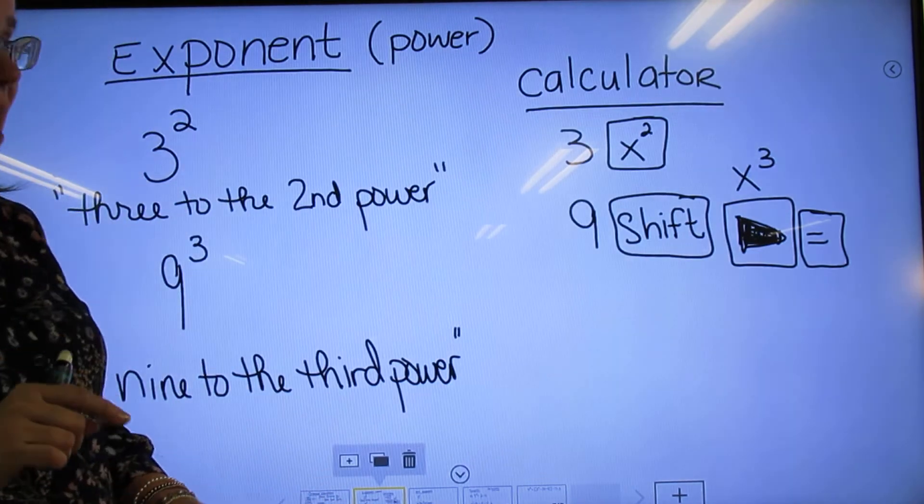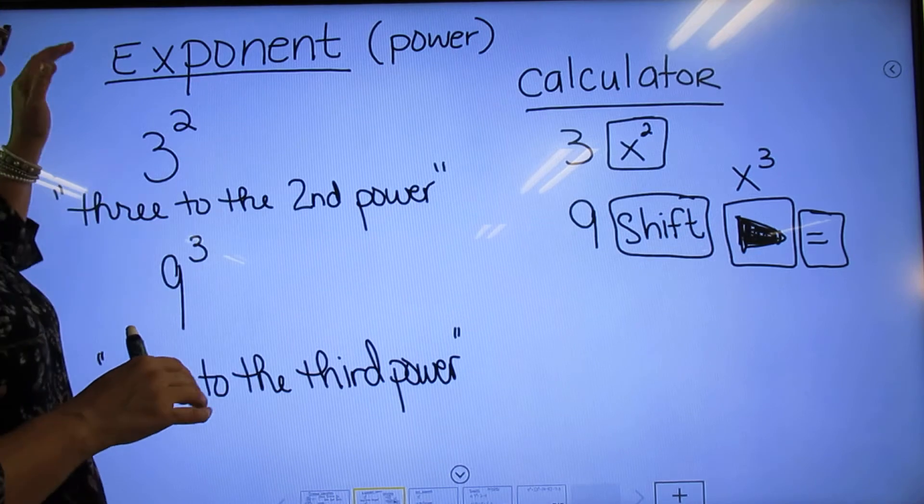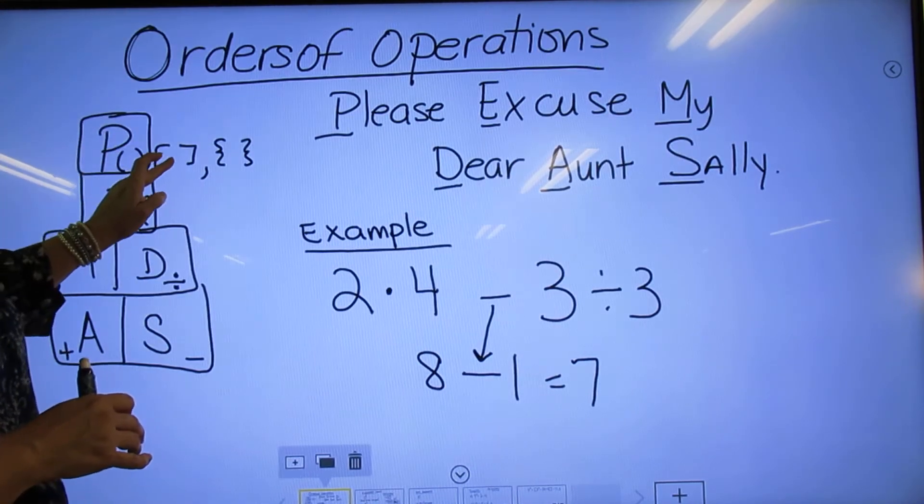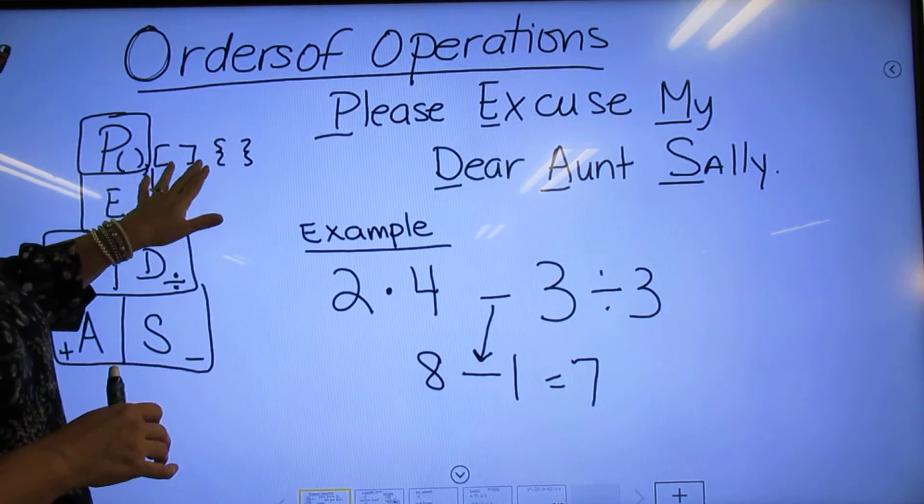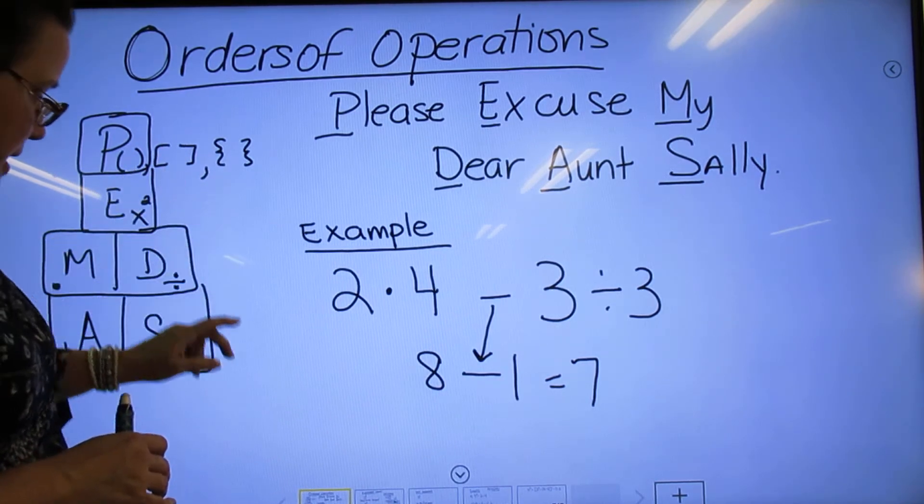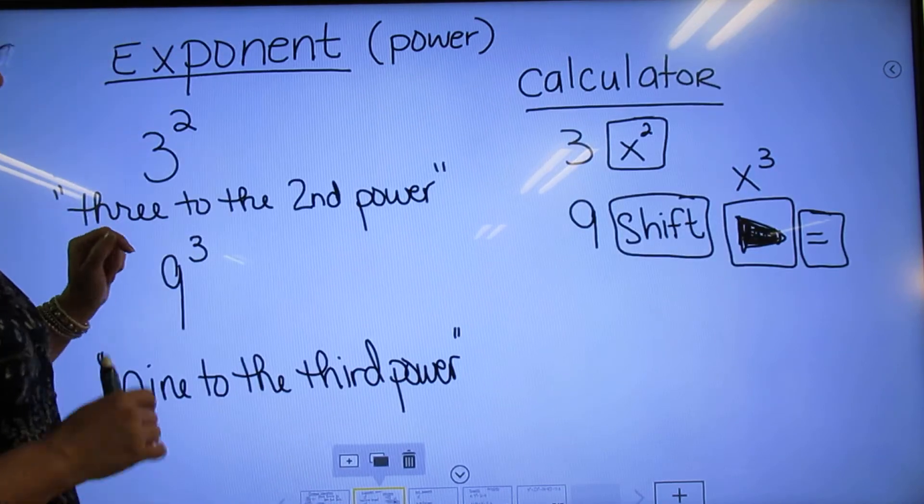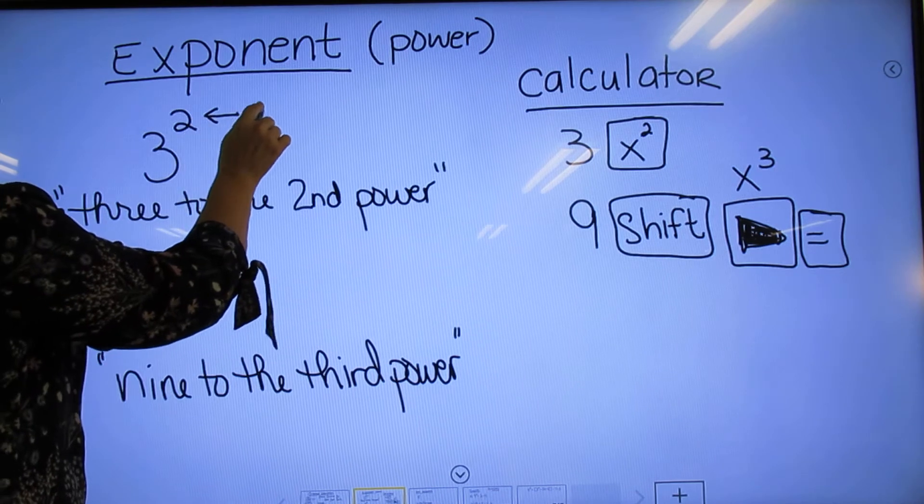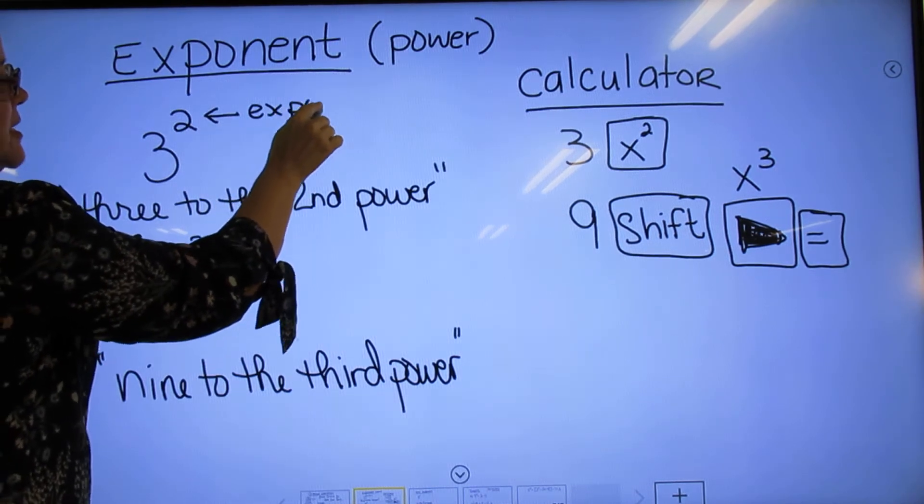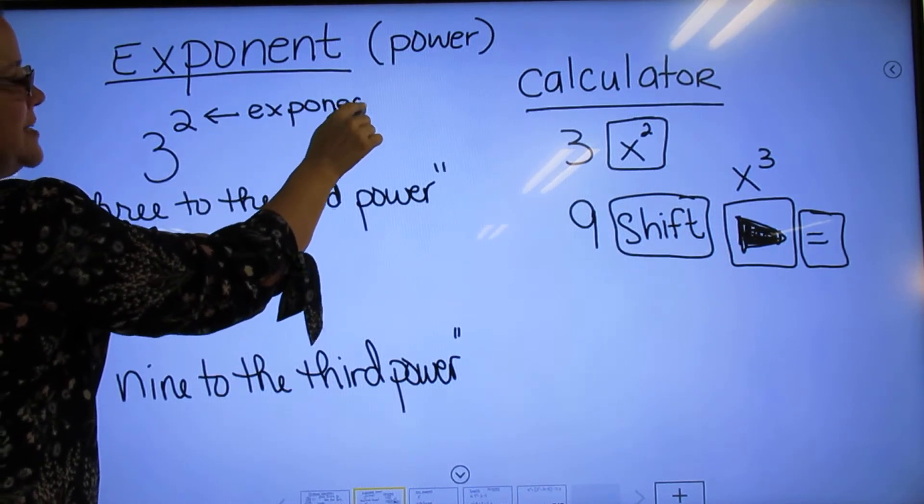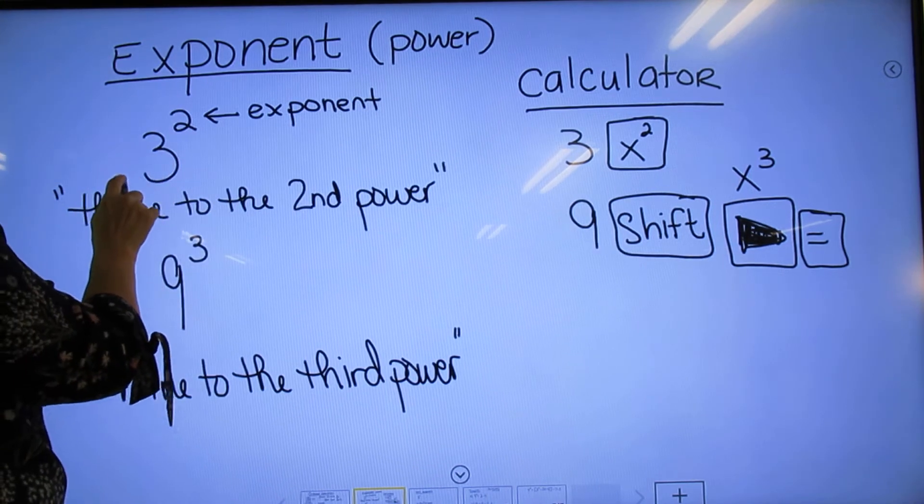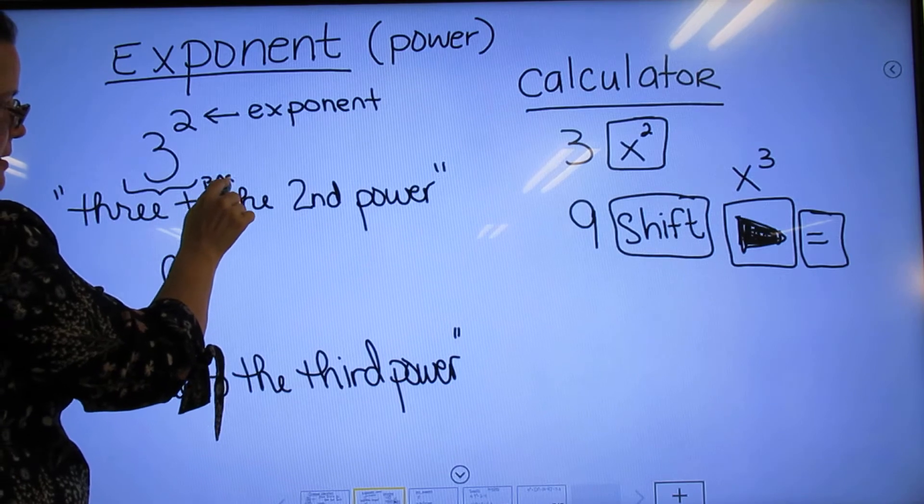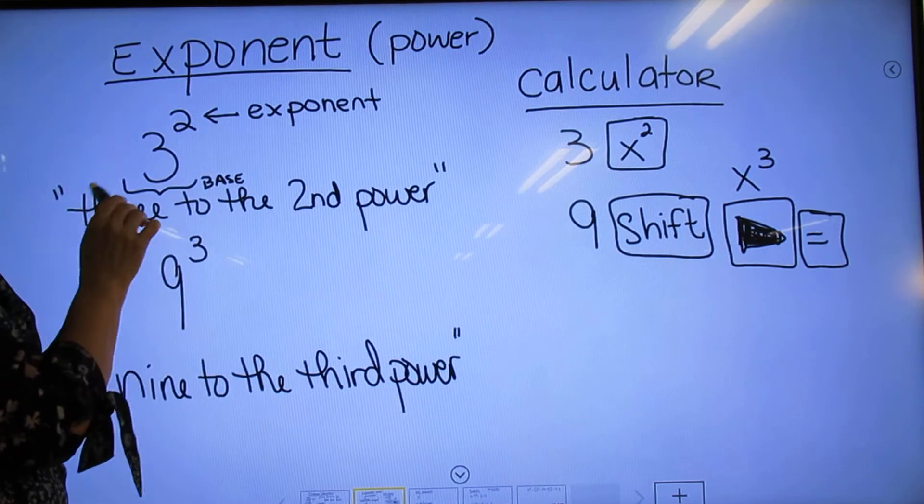But before we do that, we're going to talk a little bit about exponents. Parentheses, brackets, braces—they can be in any of those problems you're going to get. But the exponent, which is the second part, tells you how many times to multiply the base. This is your base, this is your exponent, and it tells you how many times to multiply it.